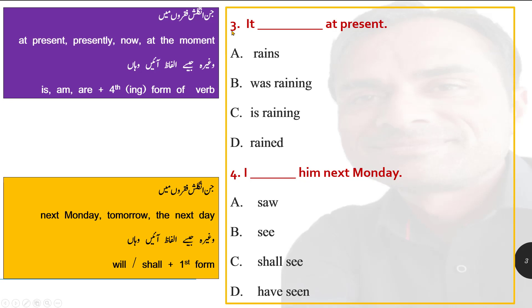Option number 3: it dash at present. Options are: rains, was raining, is raining, rained. Remember, when a sentence contains 'at present', 'presently', 'now', or 'at the moment', is/am/are plus the fourth form (ing form) is used. Since 'it' takes 'is', the correct answer is 'is raining'. It is raining at present — at this time it is raining.